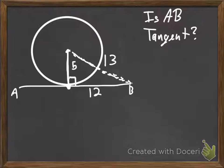So, we have to test, using our converse of the Pythagorean theorem, to see is it a right triangle? If it is, then it's a tangent line. If it's not, then that line is not tangent.